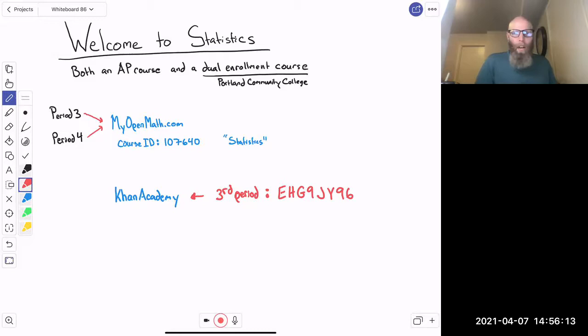So that would be Khan Academy, go to Add Teacher, put in this code, and that'll get you into our course. If you are already in third period second quarter, then you're already there and that should still be active for us. If you're in fourth period and you're new or switched classes, you're going to go BG7U6JPV.